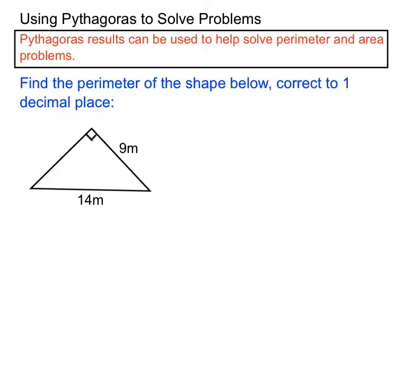Here we're asked to find the perimeter of this triangle. Now it's a bit hard because we've only got two sides out of the three that we know about. But we can use Pythagoras to find that missing side on the right angle triangle and then go ahead and find the perimeter after that. So, step one is to find the missing side there.